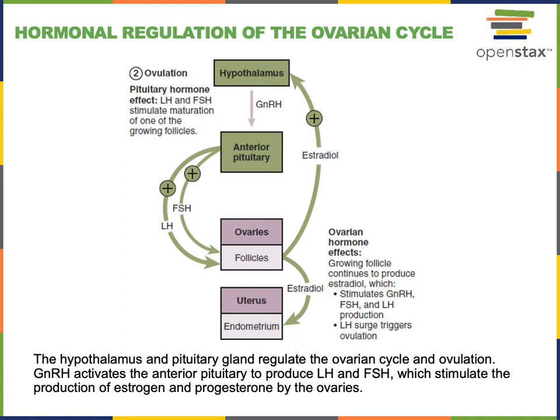The immature egg cell then travels through the oviduct, also known as the fallopian tube or uterine tube.